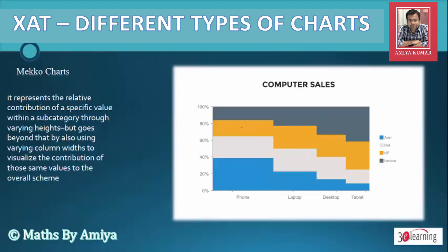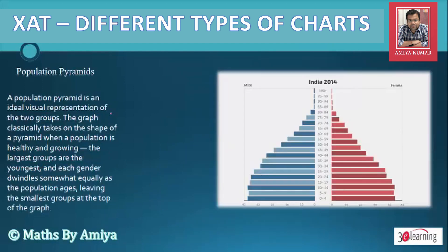Next is the Mecco Chart — again a bar graph but in a different pattern and easy to understand. It represents the relative contribution of a specific value within a subcategory through varying height, and also uses varying column width to visualize the contribution of those same values to the overall total.